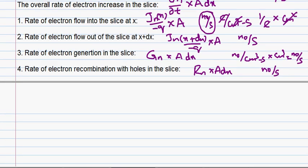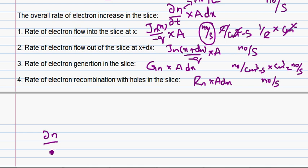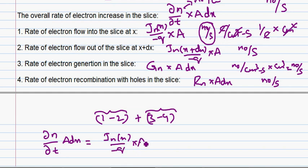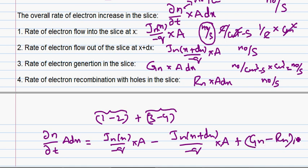Looking at all these terms, the left-hand side — the overall rate of electron increase — is ∂n/∂t times A·dx. This equals: term 1 minus term 2 plus term 3 minus term 4. Terms 1 minus 2 represent net inflow of electrons into the slice, and terms 3 minus 4 represent net generation of electrons per second. So we write: jn(x)/(−q)·A − jn(x+dx)/(−q)·A + (gn − rn)·A·dx.